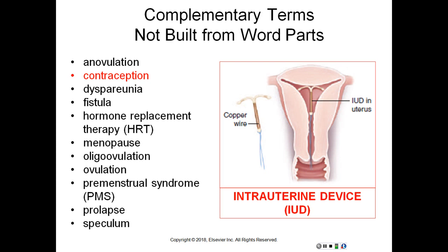Oligo-ovulation – infrequent ovulation. Ovulation – release of an ovum from a mature graafian follicle. Premenstrual syndrome – syndrome involving physical and emotional symptoms occurring up to 10 days before menstruation. Prolapse – displacement of an organ or anatomic structure from its normal position. Speculum – instrument for opening a body cavity to allow for visual inspection.